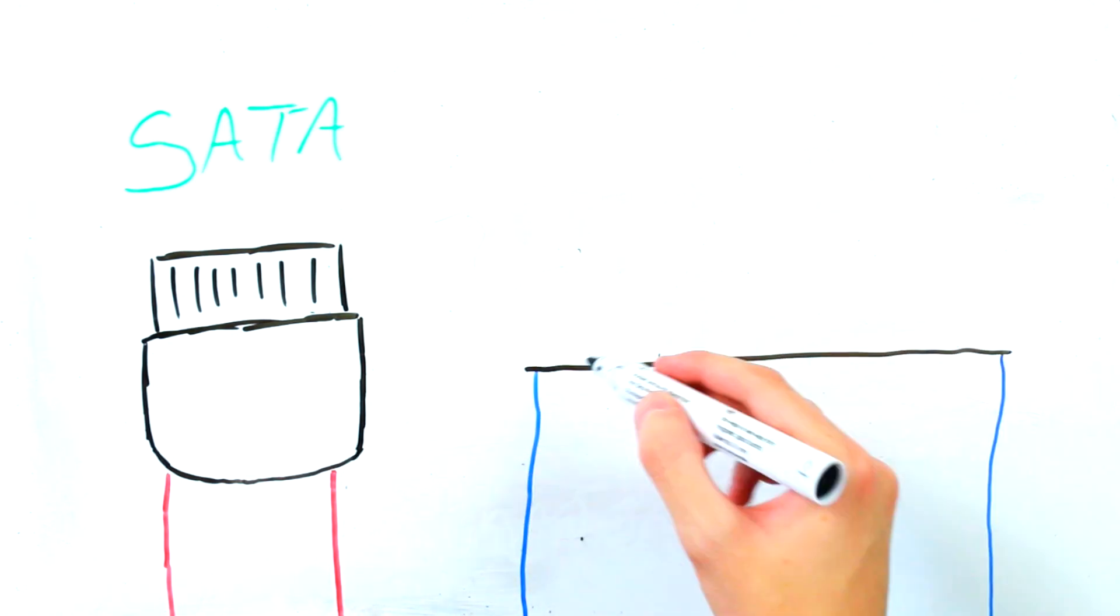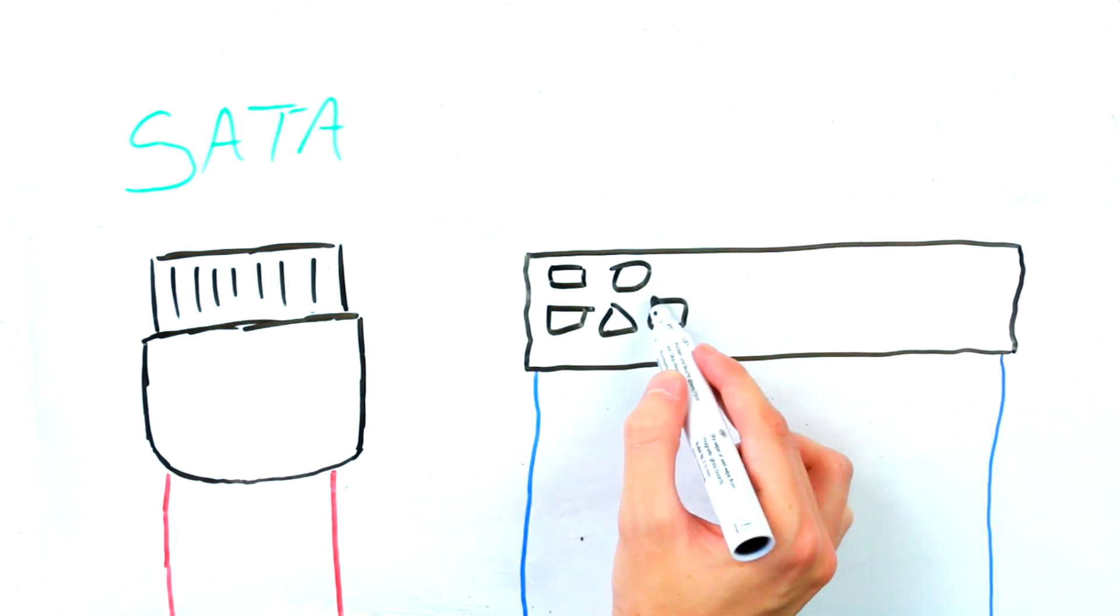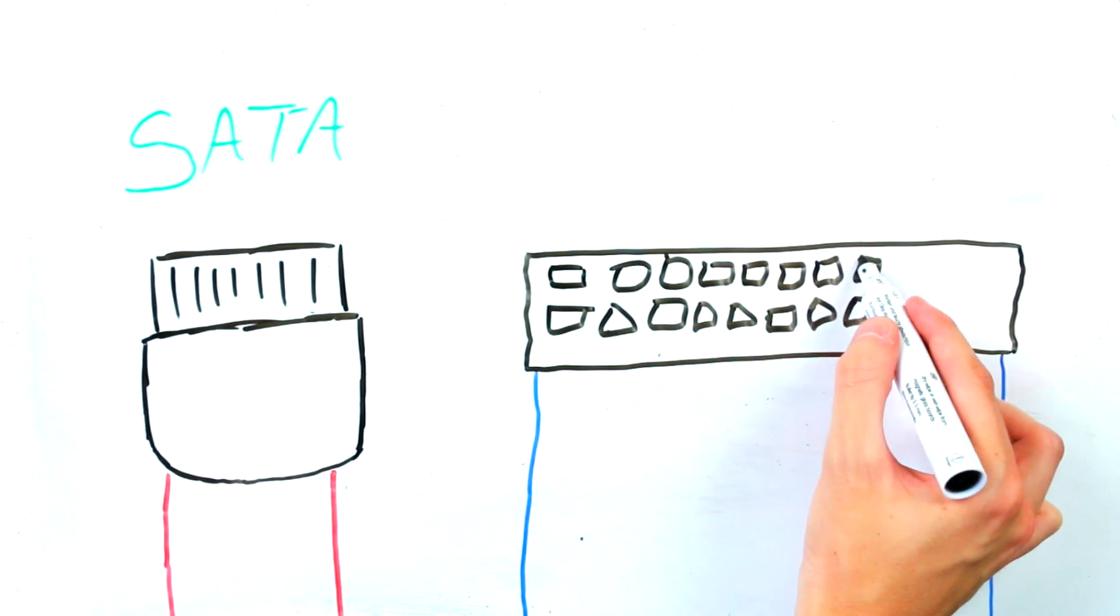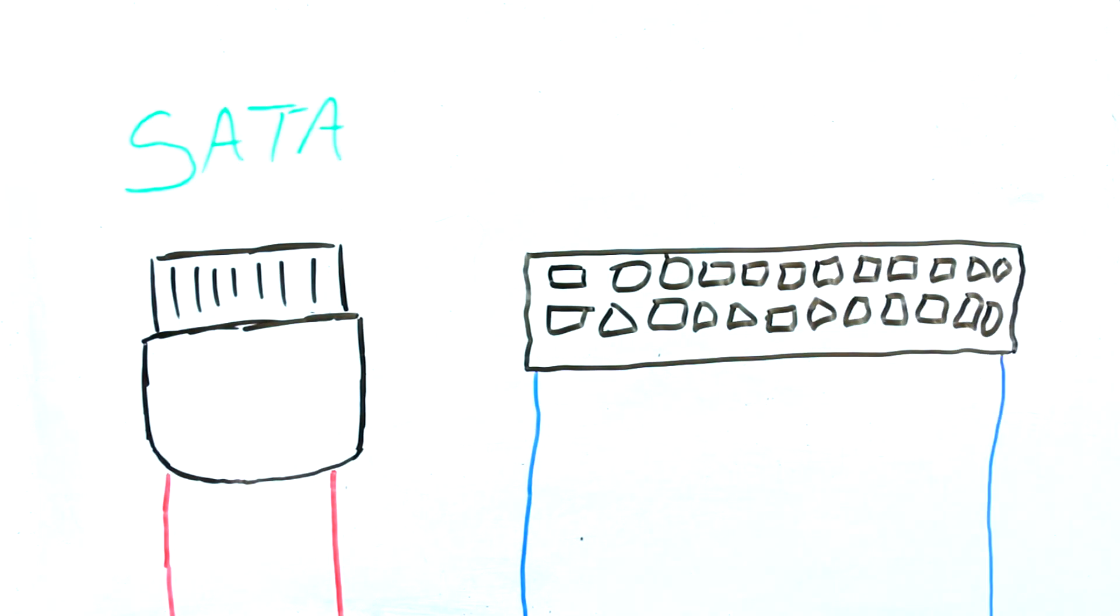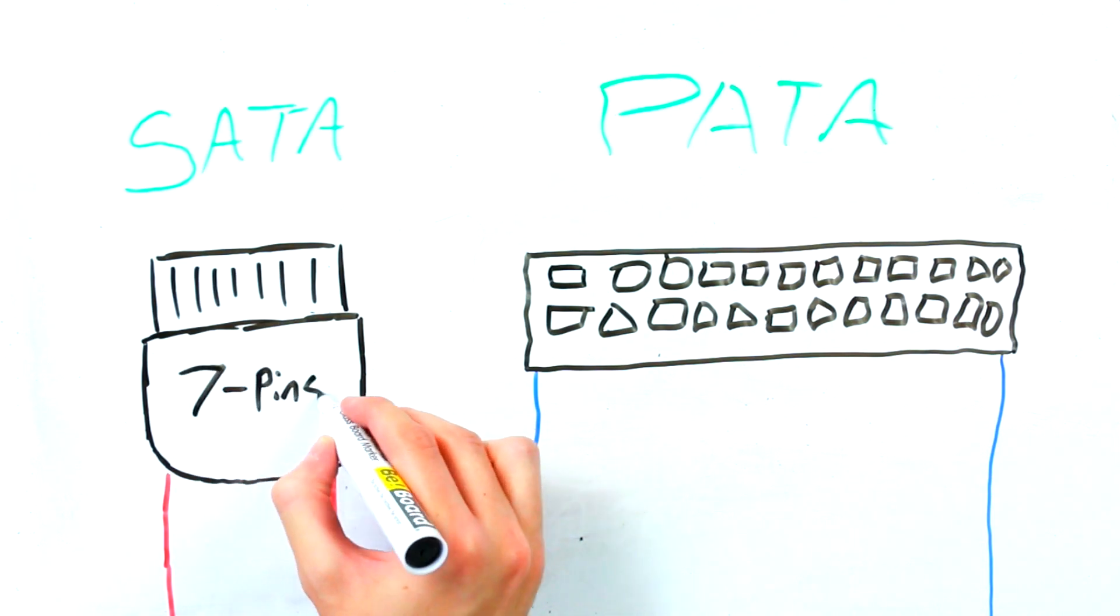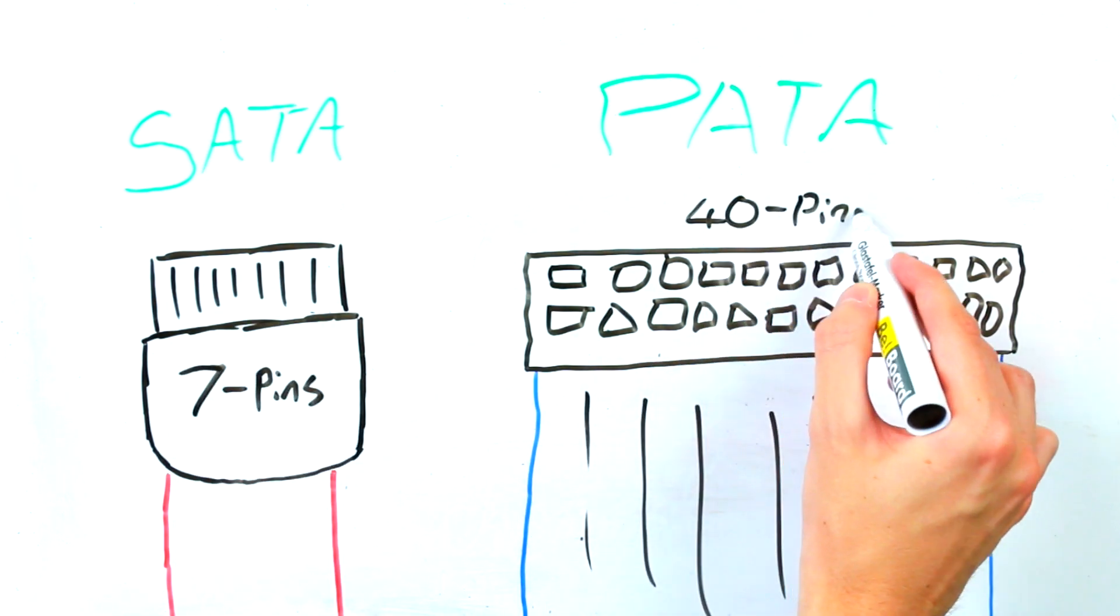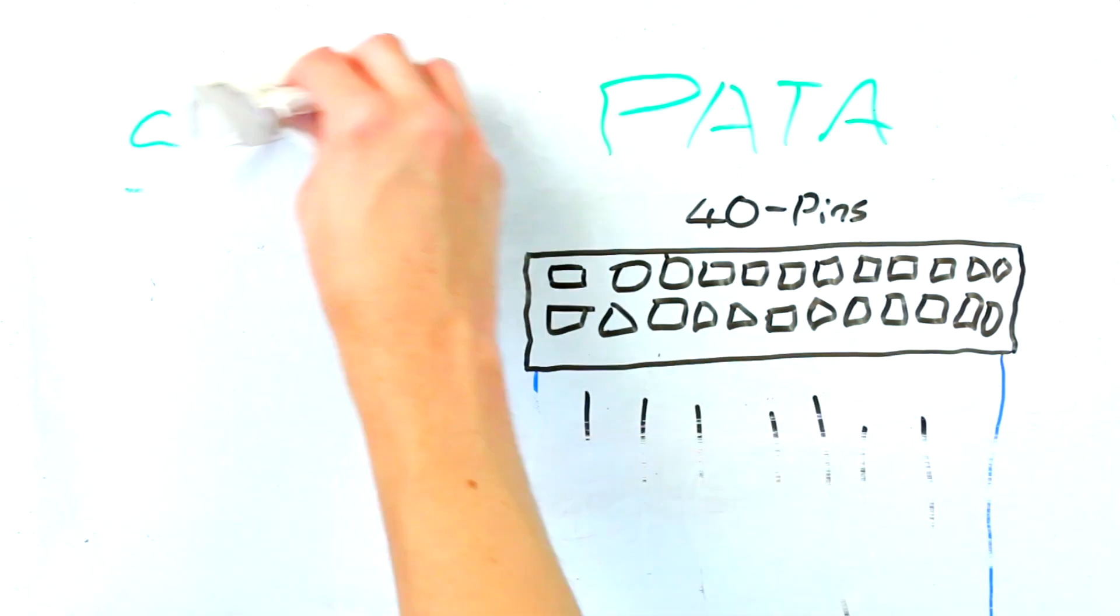SATA is the updated connection technology that replaced the older parallel ATA connection technology and offers several compelling advantages over PATA connection. These include reduced cable bulk and cost with the SATA cable consisting of a 7 pin connector and a small cable versus the PATA cable's 40 pin connector and a very wide cable.